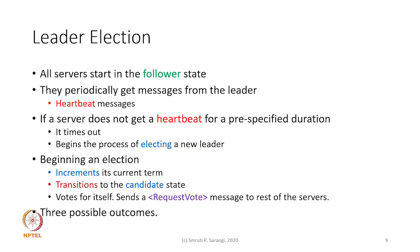All servers start in the follower state and periodically get heartbeat messages from the leader containing the term and the leader ID, so they always know who the leader is and the current term. They use this to figure out if a message is stale. If a server does not get a heartbeat for a pre-specified duration, it assumes the leader has crashed, times out, and begins the process of electing a new leader by becoming a candidate.